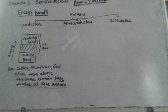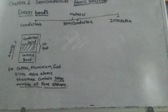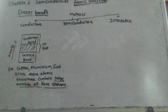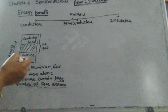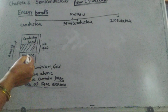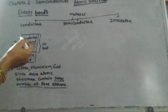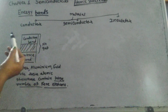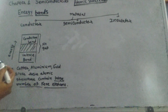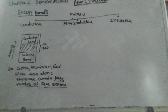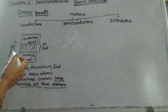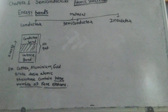When we apply a voltage to a conductor, electrons in the valence band get extra energy and jump into the conduction band. The electron becomes free from nuclear force when it goes into the conduction band.